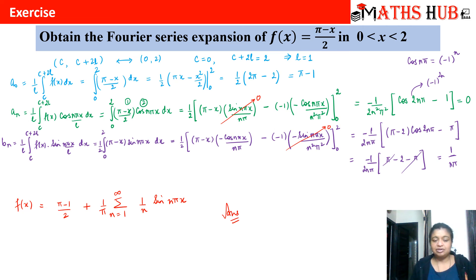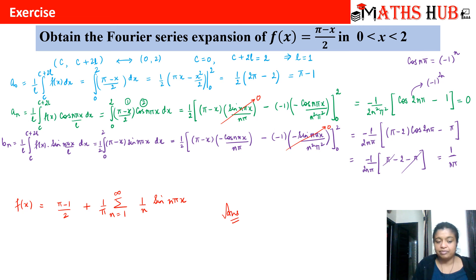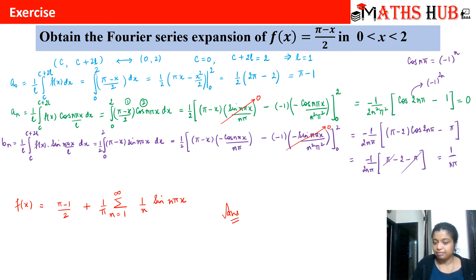So even when the Fourier series is on any arbitrary interval, we can use the same standard formulas to calculate the Fourier coefficients a₀, aₙ, and bₙ.